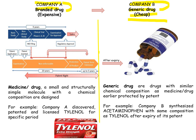That is why generic drugs are cheap — the company does not have to pay for the original research and development. This is a small molecule that has been designed through a specific patent tenure. For example, company A discovered Tylenol, it was patented, licensed, and sold as a branded drug in the market. After the patent tenure finished, company B produced its generic form, acetaminophen.